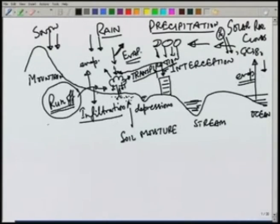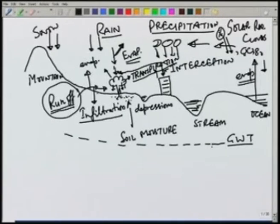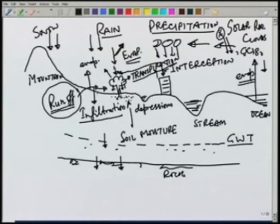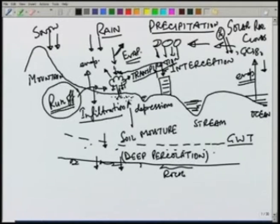Let us say there is some ground water table. The ground water table denotes the top of the water inside the ground, which would be at atmospheric pressure. There will be a rock base — rock above which this water will be standing. The water which infiltrates into the ground water, some part of it may percolate very deep into the rocks and may be lost for all practical purposes, and is called deep percolation.